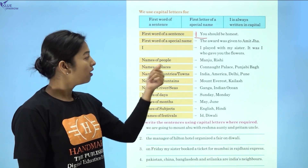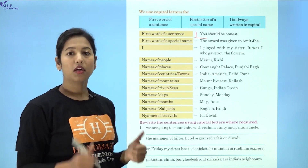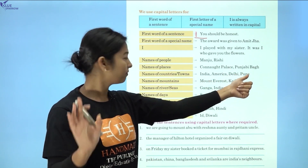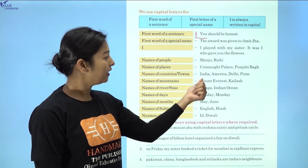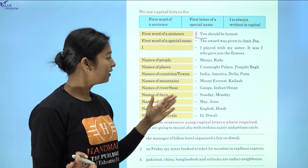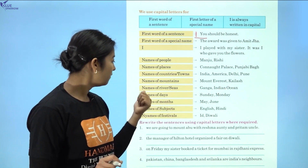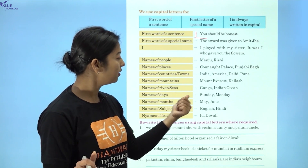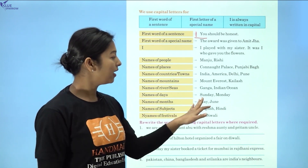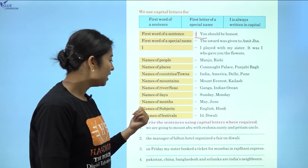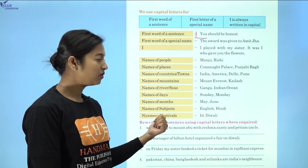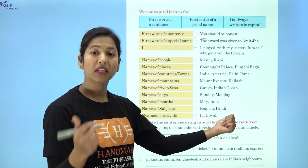Names of people — for example, Manju, Rishi — every name starts with a capital letter. Names of places, such as Connaught Place, Punjabi Bagh. Names of countries and towns — India, America, Delhi, Pune, etc. Names of mountains — Mount Everest, Kailash. Names of rivers and seas — Ganga, Indian Ocean. Names of days — Sunday, Monday, Tuesday, etc. Names of months — May, June, December, etc. Names of subjects — English, Hindi, Mathematics, etc.